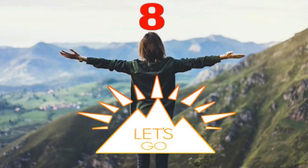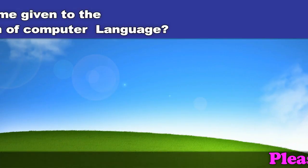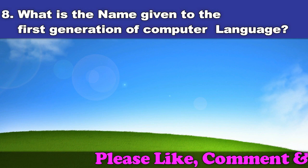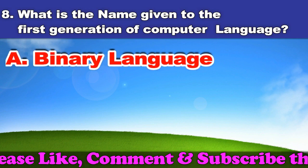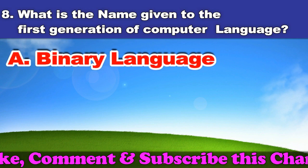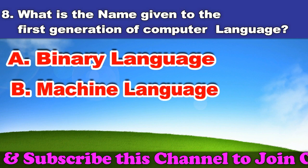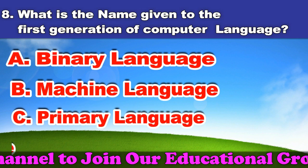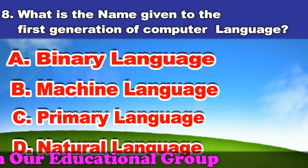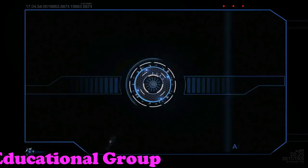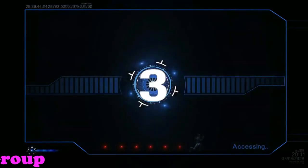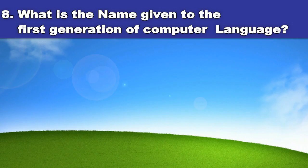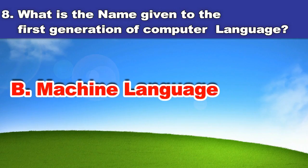Eighth question: What is the name given to the first generation of computer language? A. Binary language. B. Machine language. C. Primary language. D. Natural language. And the answer is machine language.